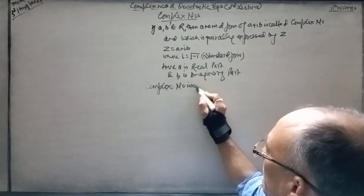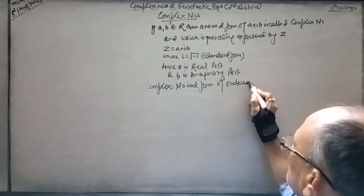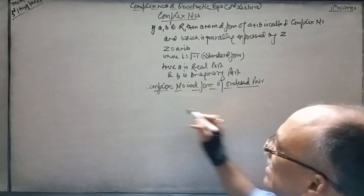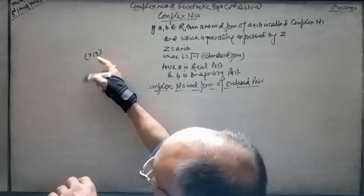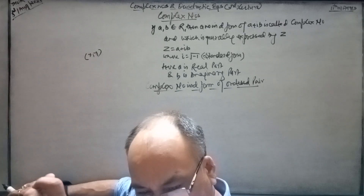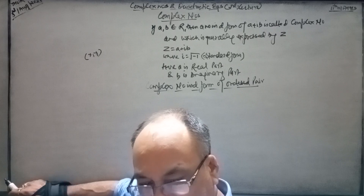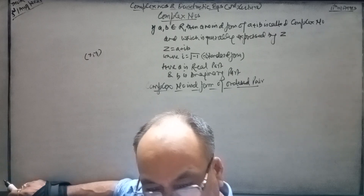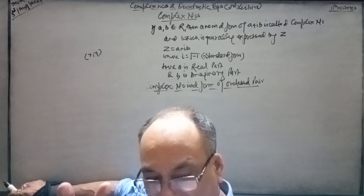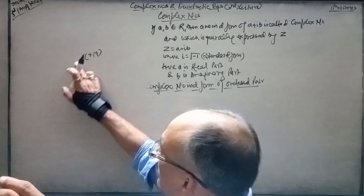A complex number can also be written in the form of an ordered pair. Like in coordinate geometry, x and y — where x denotes the abscissa and y the ordinate — when abscissa and ordinate are placed together inside parentheses separated by a comma, that is the coordinate geometry form. Similarly, the first and second components of a complex number are separated by a comma and kept inside parentheses.